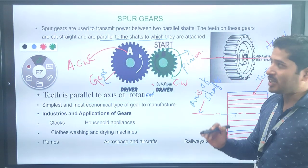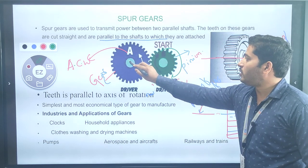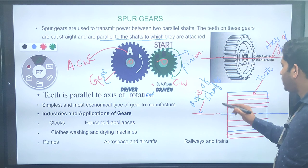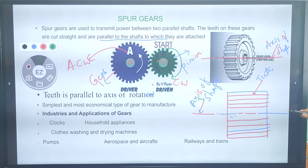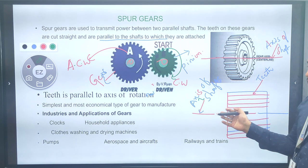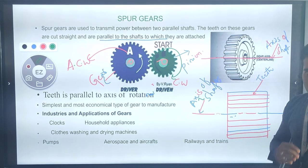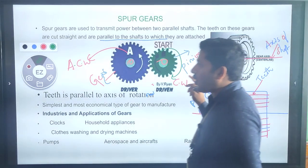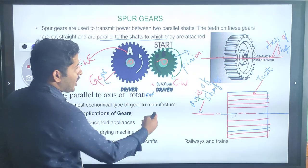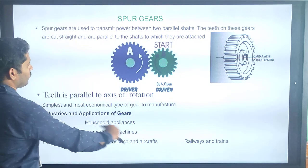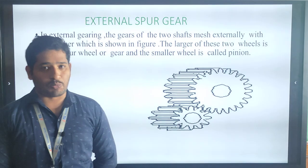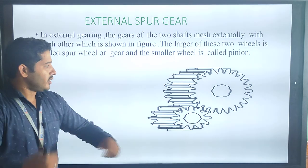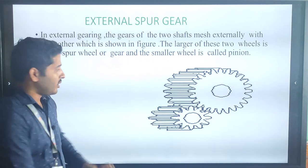Spur gear is mainly used to transmit power between two shafts. The teeth on this gear are cut straight and parallel to the shaft. We use spur gears in clocks, pumps, washing machines, household applications, and aerospace and aircraft. External spur gear is where the driver gear and the driven gear mesh externally.